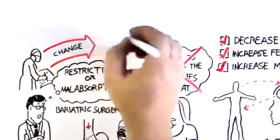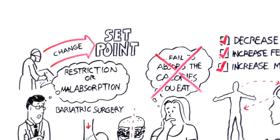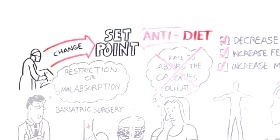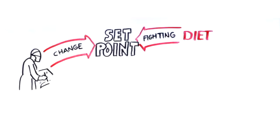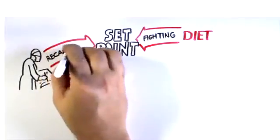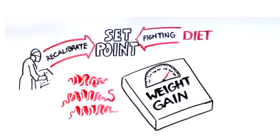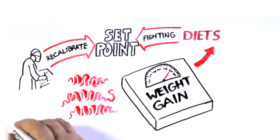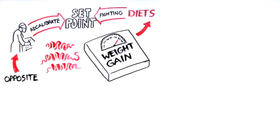Surgery may change the set point for body fat. It's like the anti-diet. Instead of fighting the set point like a diet does, surgery may recalibrate it, and the hormones that stimulate weight gain when a person diets do the exact opposite after surgery as the body regulates itself to the new lower set point.